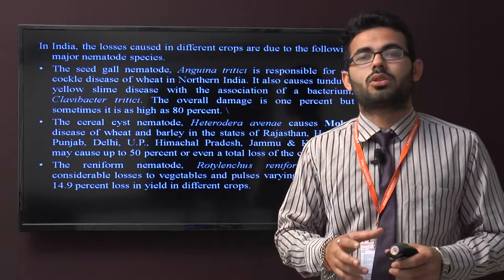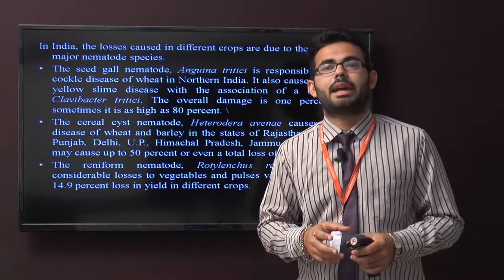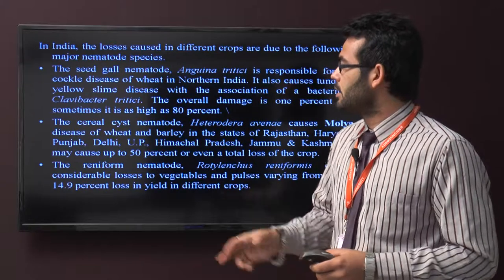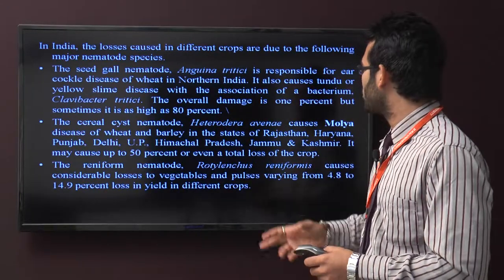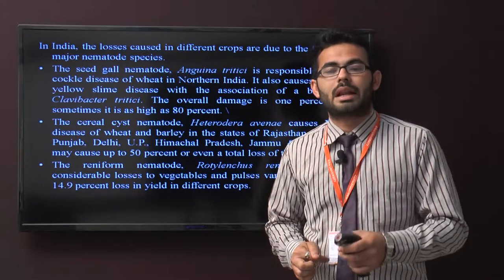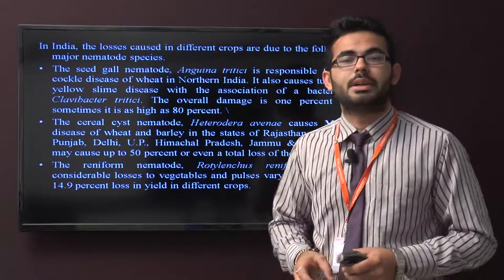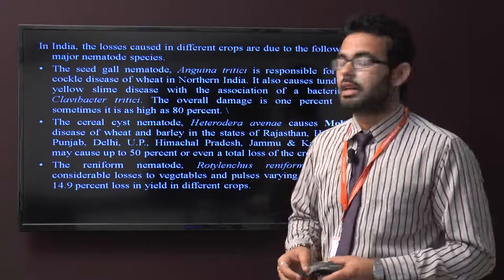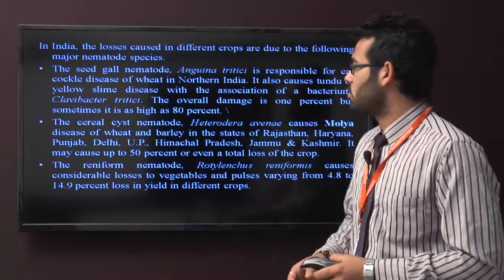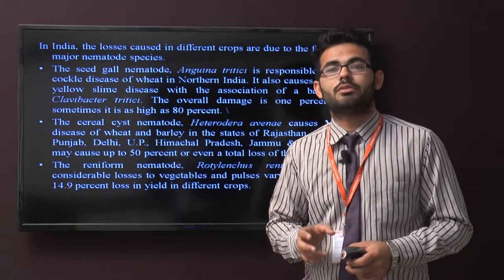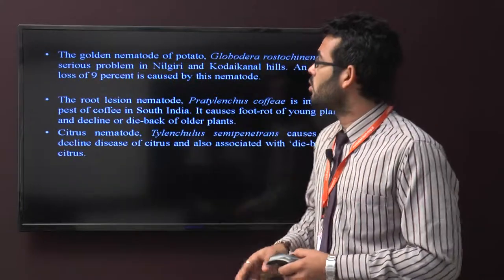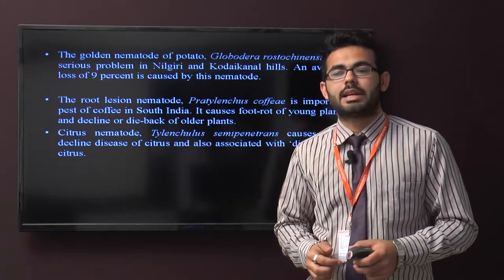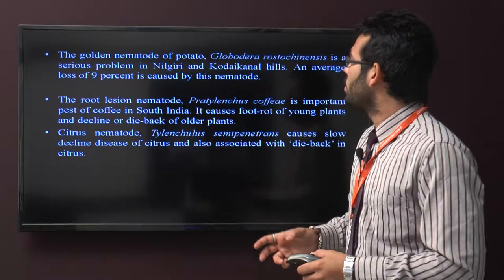Nematodes are also associated with microorganisms like fungi and bacteria, causing disease in agricultural crops. The cereal cyst nematode Heterodera avenae causes the Molya disease in wheat and barley in the states of Rajasthan, Punjab, Delhi, UP, and Asia. The reniform nematode Rotylenchulus reniformis causes considerable losses in vegetables and pulses.